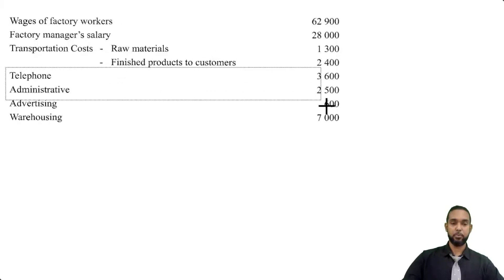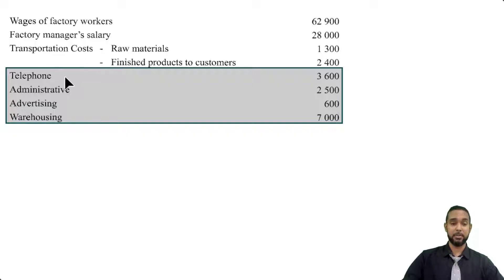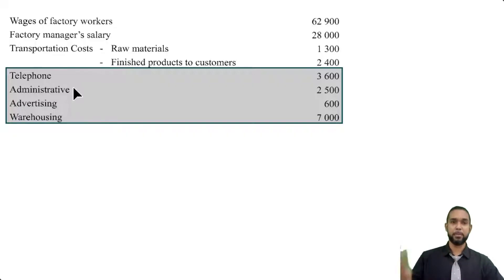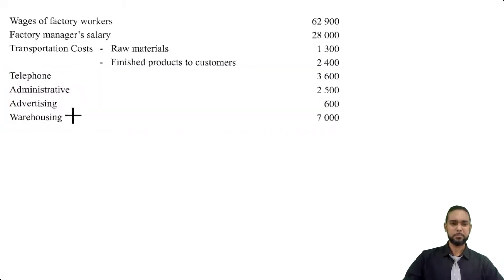Next we have a few more balances: telephone, admin, advertising, and warehousing. All of these would go in the income statement unless they can be split between factory and non-manufacturing. Warehousing is storage — that's not manufacturing.